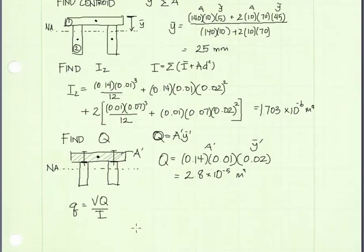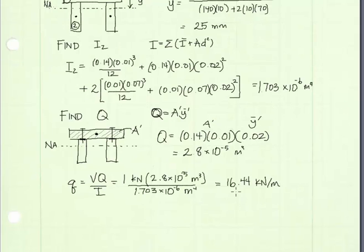Now I will solve for shear flow in the member. Shear flow equals V times Q divided by I, where V is the internal resultant shear force — given as one kilonewton — Q is what we just calculated, and I is the moment of inertia calculated above. I get a value for shear flow of 16.44 kilonewtons per meter.